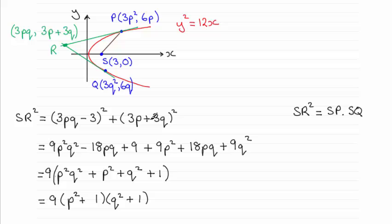And when you square this out you get this. Pull out 9 and then group up your terms gives you this. And this factorizes really nicely to P squared plus 1 times Q squared plus 1.